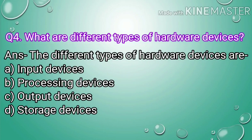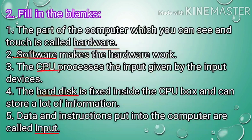Question number 4: What are the different types of hardware devices? Answer. The different types of hardware devices are: A. Input devices, B. Processing devices, C. Output devices, D. Storage devices.